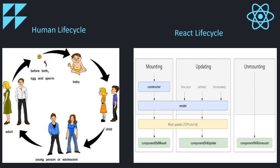So there are three phases in human lifecycle: birth, update, and death. In the same way, the three phases of React lifecycle are mount, update, and unmount. Whenever you are asked how many phases exist in a lifecycle, you should always say three phases — mount, update, and unmount. There are multiple lifecycle methods, but phases are only three. Inside every phase there are multiple methods or functions.